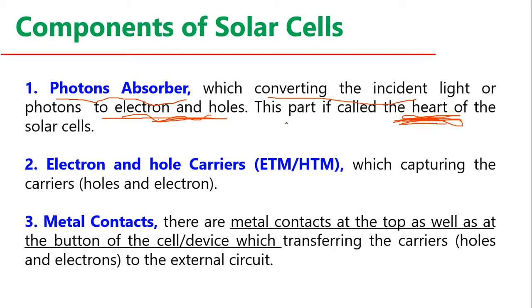We need a material that absorbs more light and produces more electron-hole pairs. The second part is the electron and hole carrier layers — as I explained, we need high electron mobility and materials with fewer defects. We can work here and solve these problems incrementally.